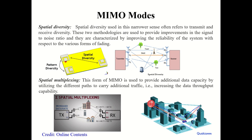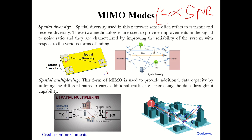MIMO has two main modes. The first is spatial diversity, which improves SNR and thus capacity indirectly. The second is spatial multiplexing, which enhances throughput directly. Since capacity is directly proportional to SNR, improving SNR through spatial diversity can also increase data rate.